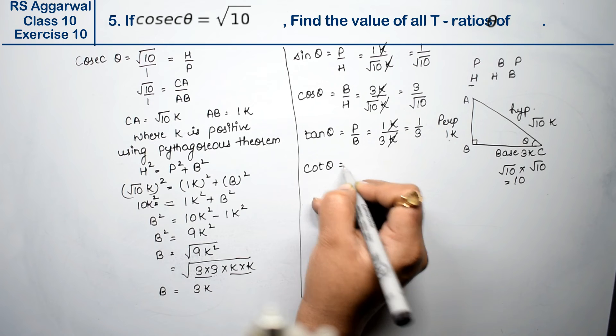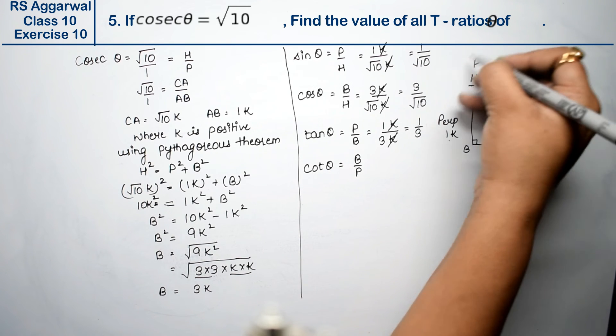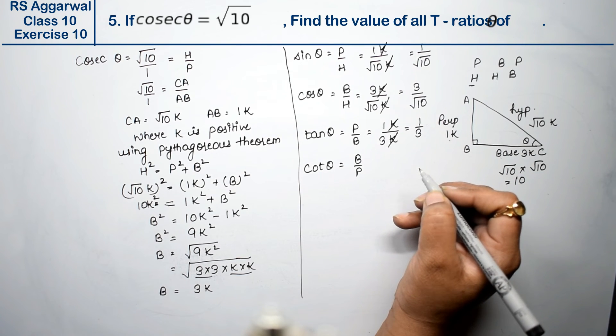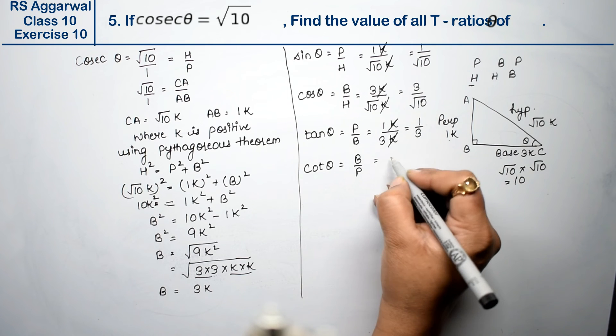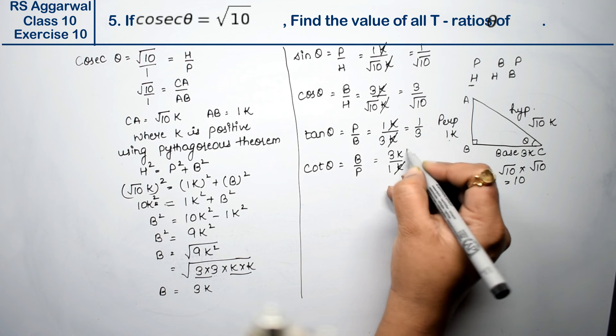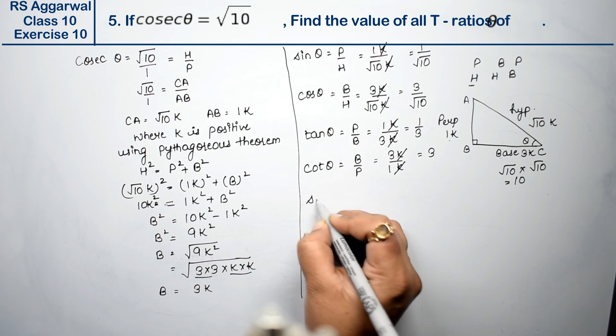Cot theta is B upon P. This B upon P, P upon B, all of this I'm writing from here. I've explained this in the introductory chapter. B is 3k, P is 1k. K and k cancel, so 3 remains.